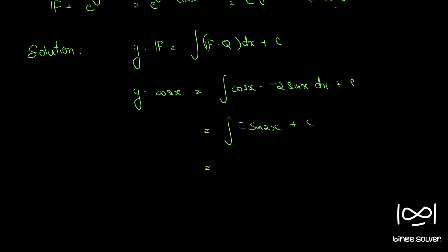Integrating, the integral of sin 2x is minus cos 2x. So minus times minus becomes plus cos 2x by 2 plus c. Therefore y into cos x is equal to cos 2x by 2 plus c.